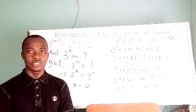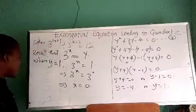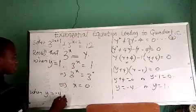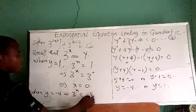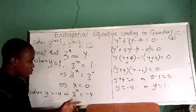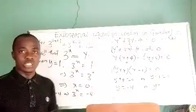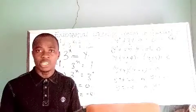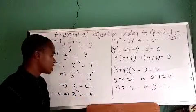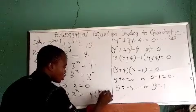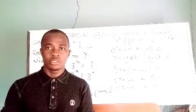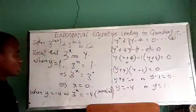When y = −4, we have 3^x = −4. This second value is invalid because we cannot have a negative base in this context — there is no solution. Therefore the only possible value is x = 0.